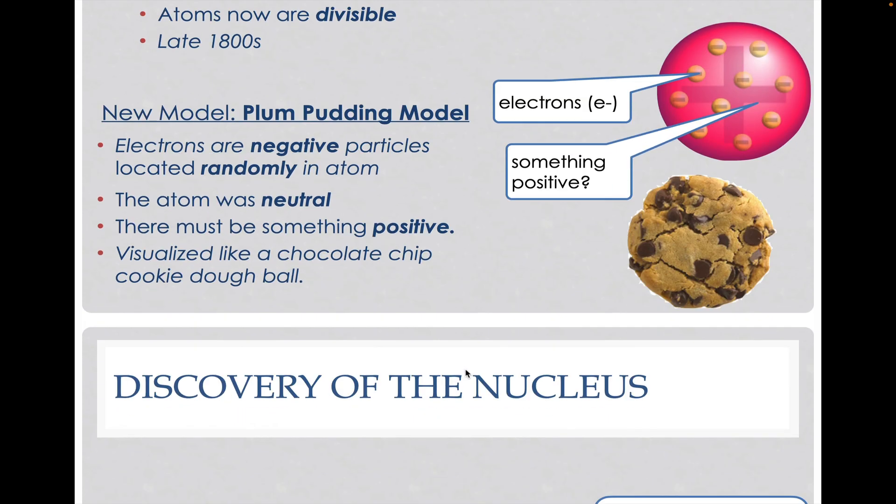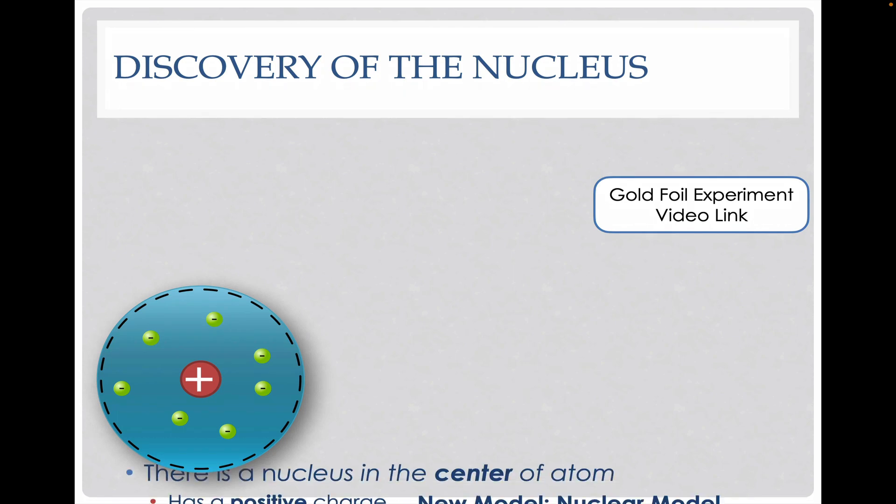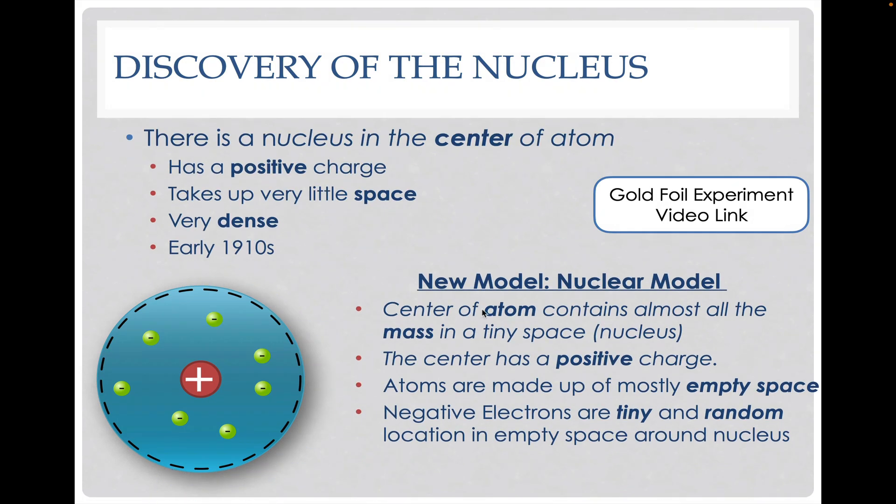In the next model, we discovered the nucleus. Once we discovered the nucleus, we knew that the atom had this center core that was positively charged, that was very, very tiny, but made up all of the mass, which made it very dense. Now we're in the early 1900s for our timeline.